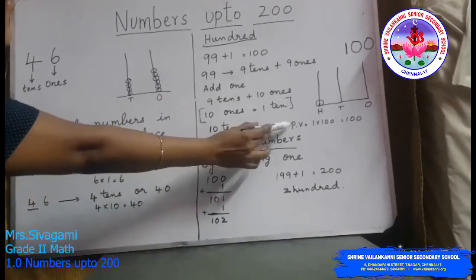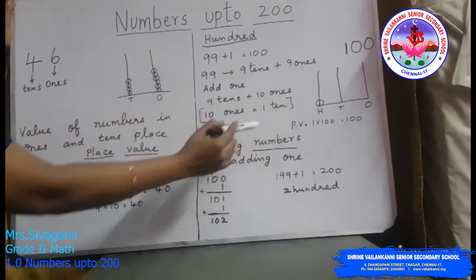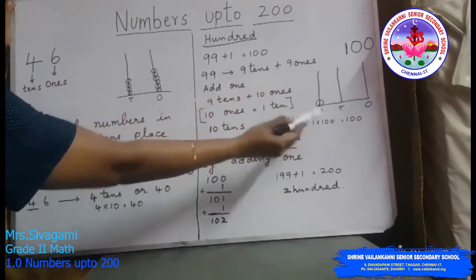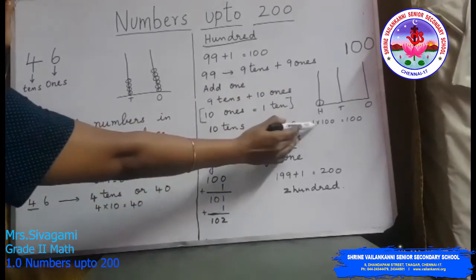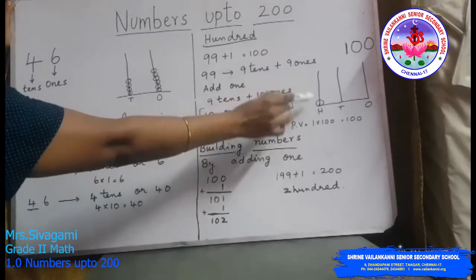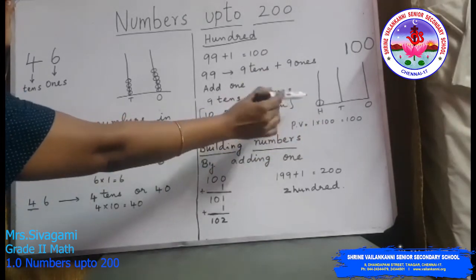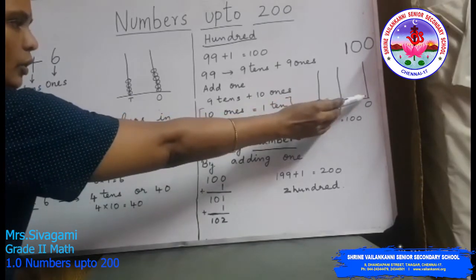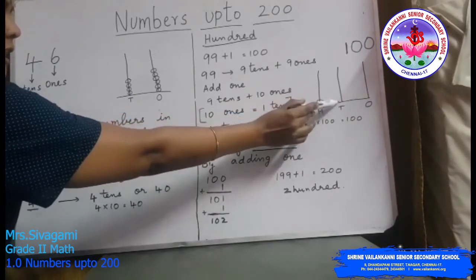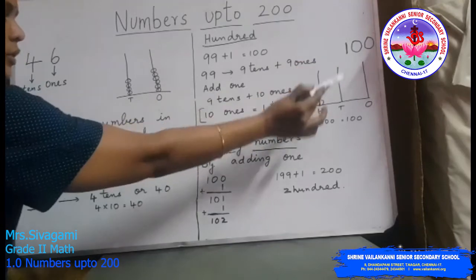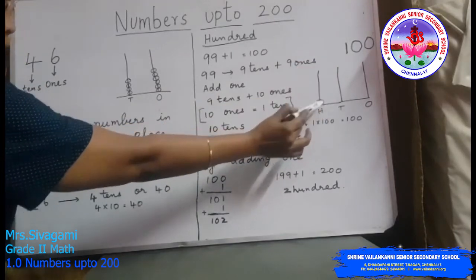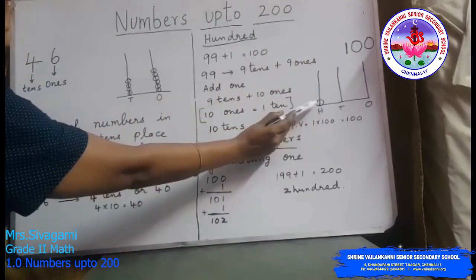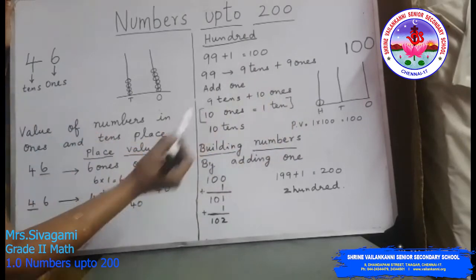The place value of 100 is found by multiplying the number in the hundreds place by 100. So 1 into 100, you get 100. In the abacus, to represent 100: there are no ones, so you do not draw any beads. In the tens place also there is no number, so you will not draw any beads. In the hundreds place there is 1, so you will draw 1 bead in the hundreds place.